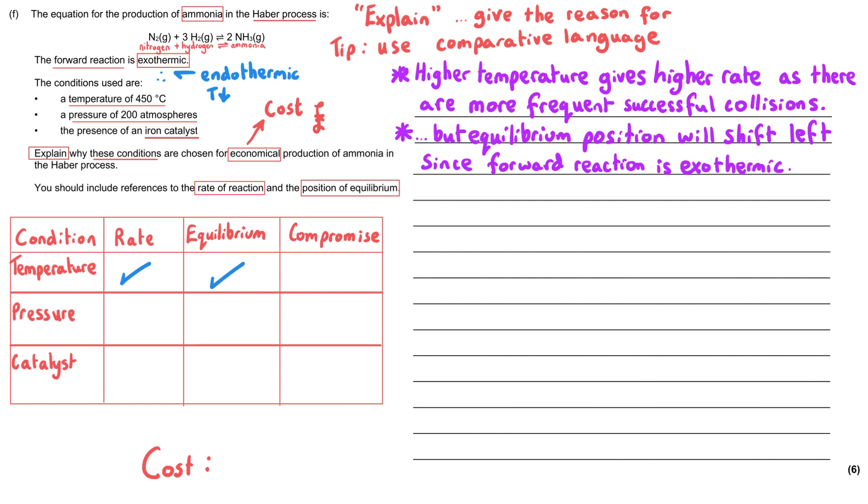And then in terms of a compromise, we're talking about this being a compromise between the rate of reaction and the position of equilibrium. Additionally, if we're trying to reach higher temperatures, that will use more energy and so therefore that will increase costs. And so you could also say that the temperature that we choose is a compromise between the rate of reaction and cost. So we've said more than enough about temperature there.